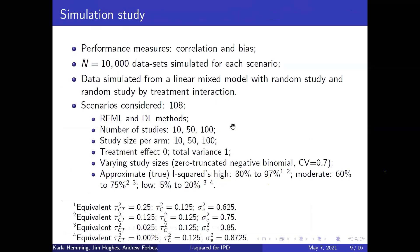But that was just one dataset, so we used a simulation study to measure the performance of the one-stage approach at estimating I-squared. In each of 108 scenarios, I simulated 10,000 datasets from a linear mixed model with a random study effect and a random study-by-treatment interaction, using REML and Simon-Laird methods, varying the number of studies, study sizes per arm, and a wide range of I-squared values. I looked at the correlation between I-squared from the one-stage and two-stage approaches, and also checked for bias.